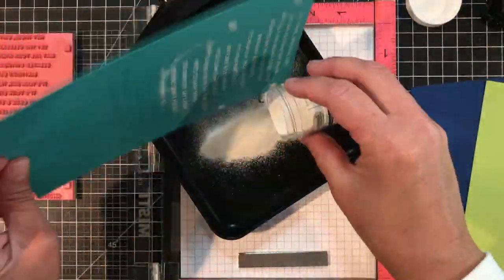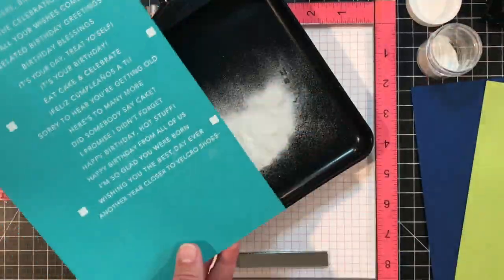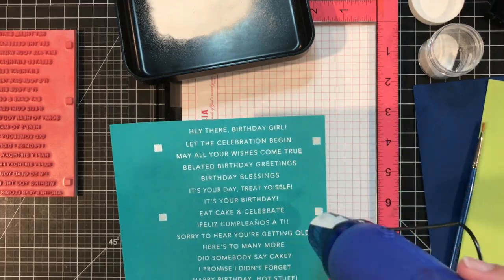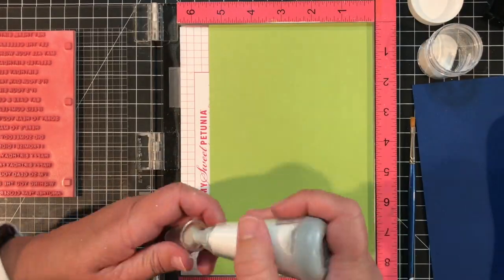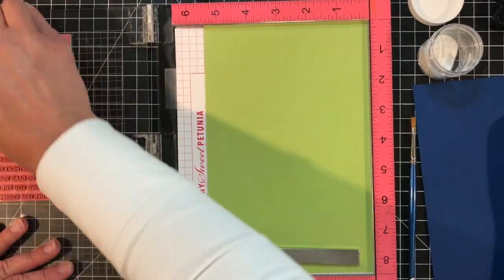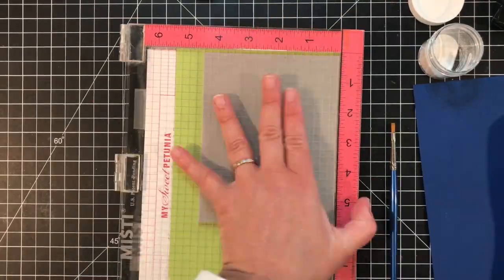Once the sentiments are stamped I'll add white embossing powder and then I'll use my heat tool to melt the embossing powder and emboss the sentiments. I'll repeat this process to add the sentiments to Granny Smith cardstock and Blueberry cardstock.